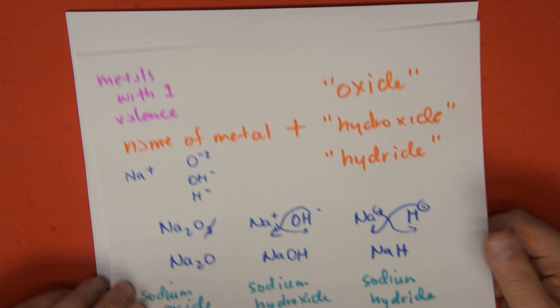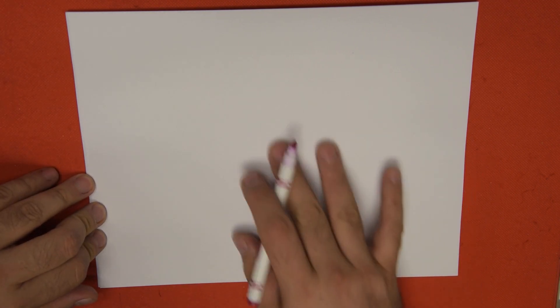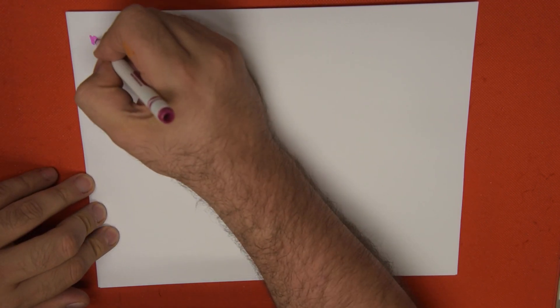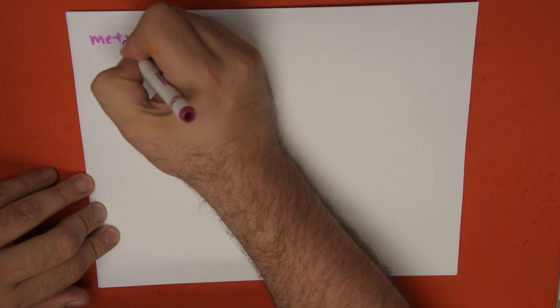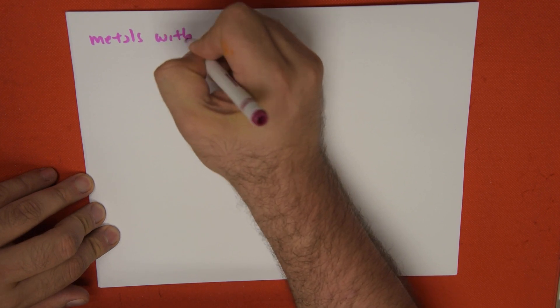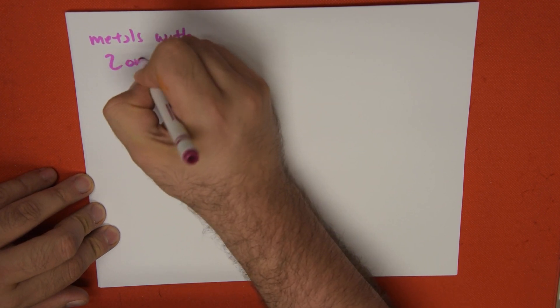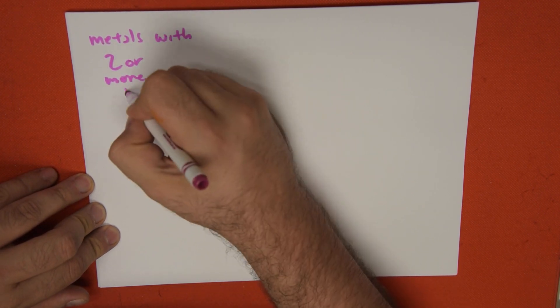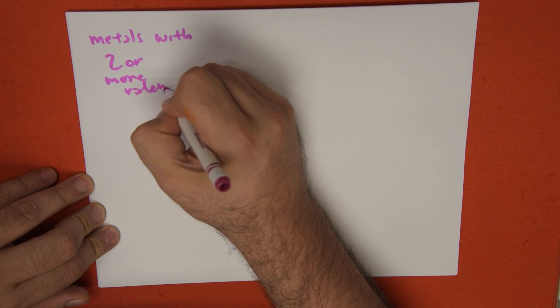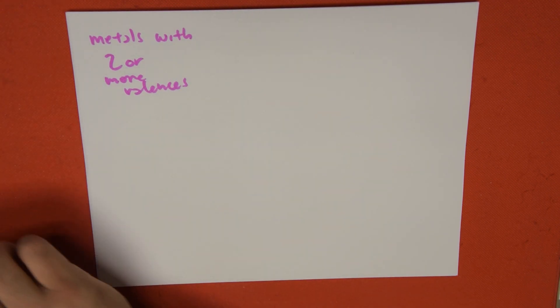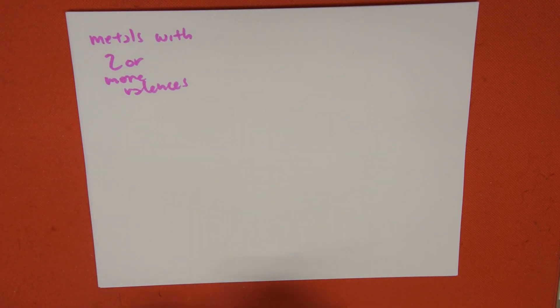When we have metals with two or more valences, we add something additional, because remember, we have two types of names.